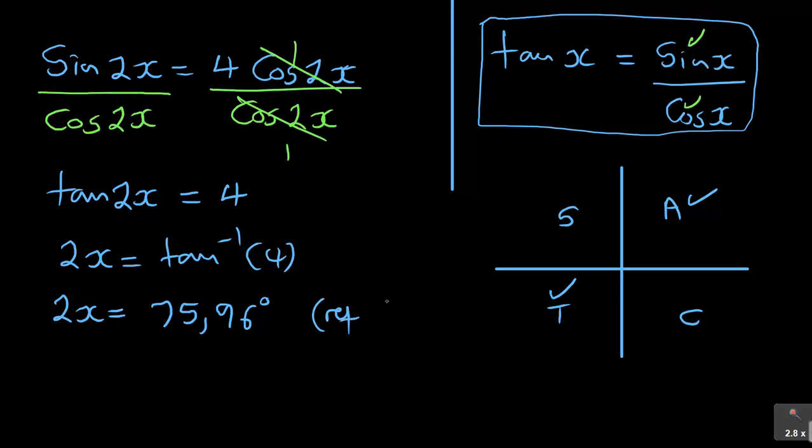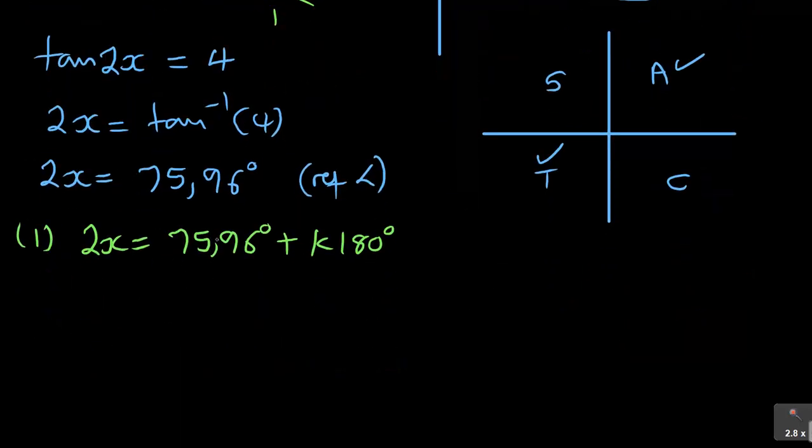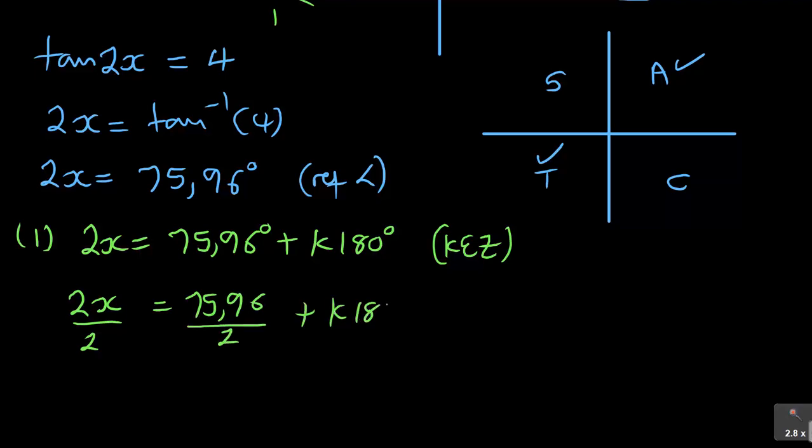So what you're going to do is, for quadrant number 1, you're going to say 2x is equal to 75.96 degrees plus, now, in this particular angle, it's K 180 degrees. Because tan has got a period of 180. Don't forget, tan, sin and cos is 360, tan is 180. Don't forget to write K is an element of real numbers. So when you've done that, then you can divide by 2 on both sides. 2x over 2 is equal to 75.96 over 2 plus K 180 over 2.